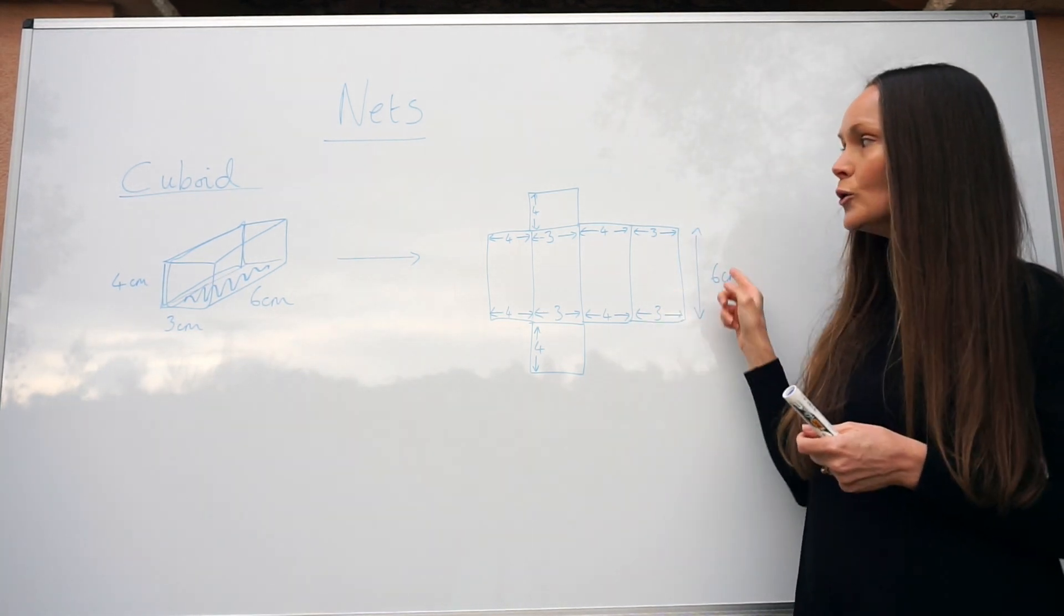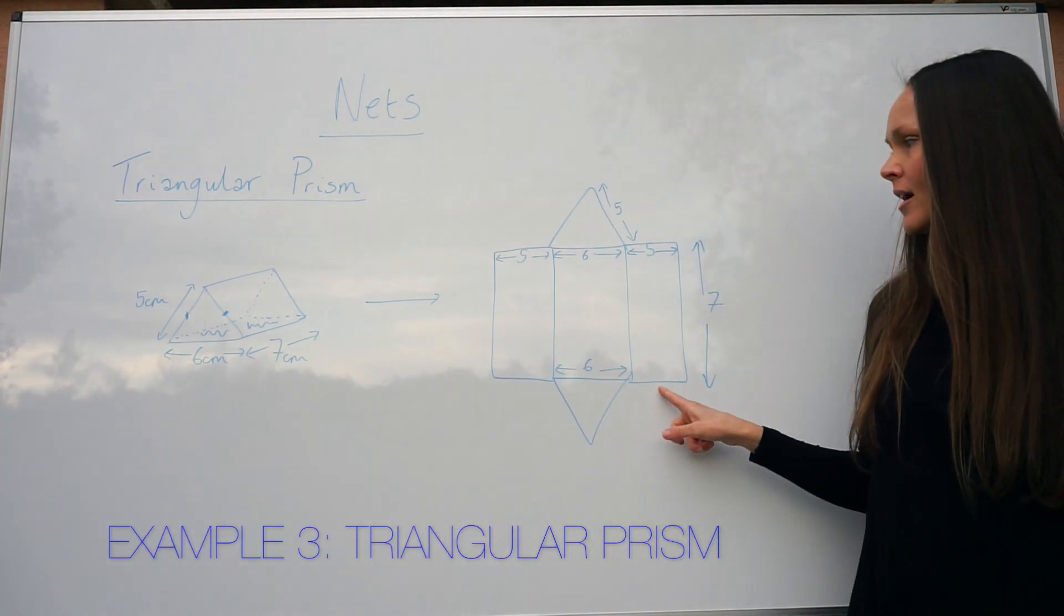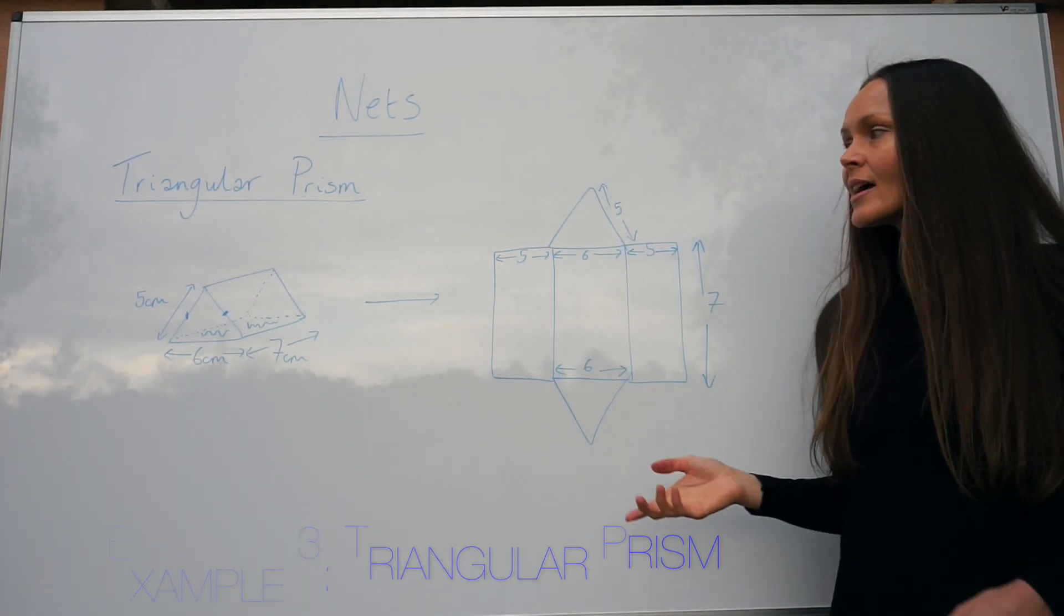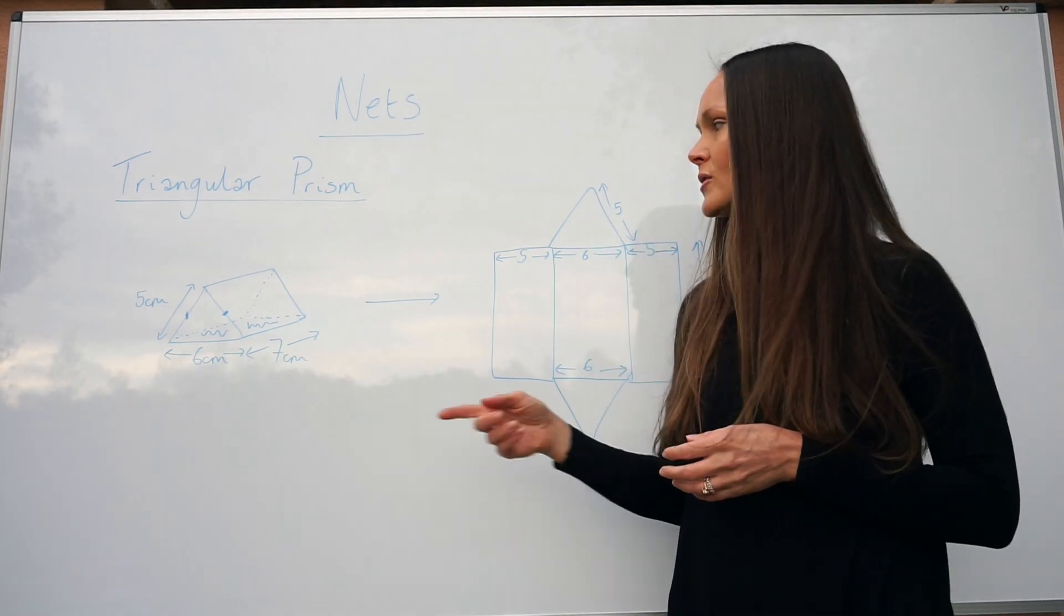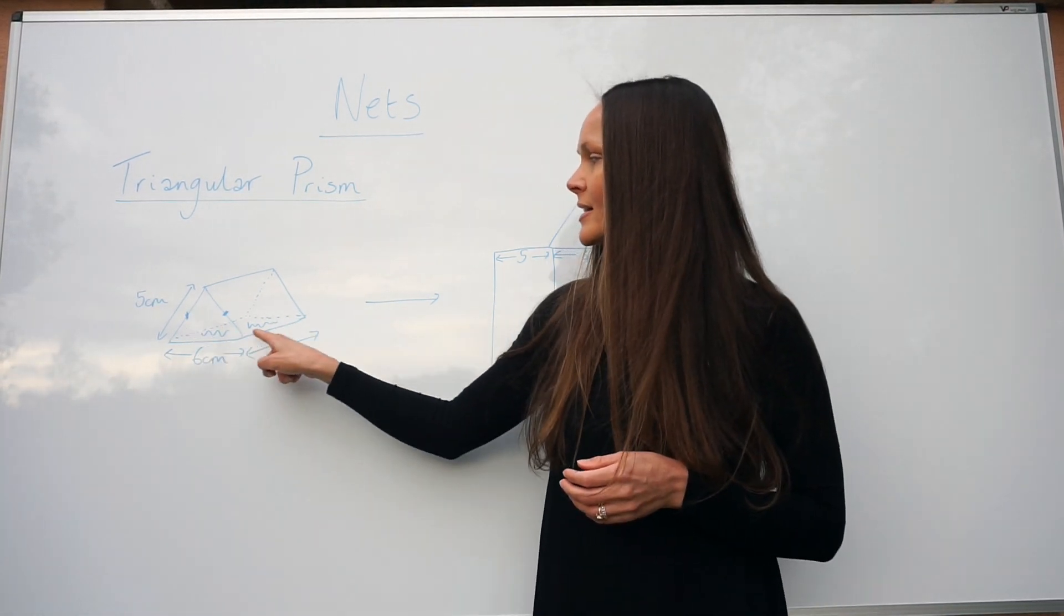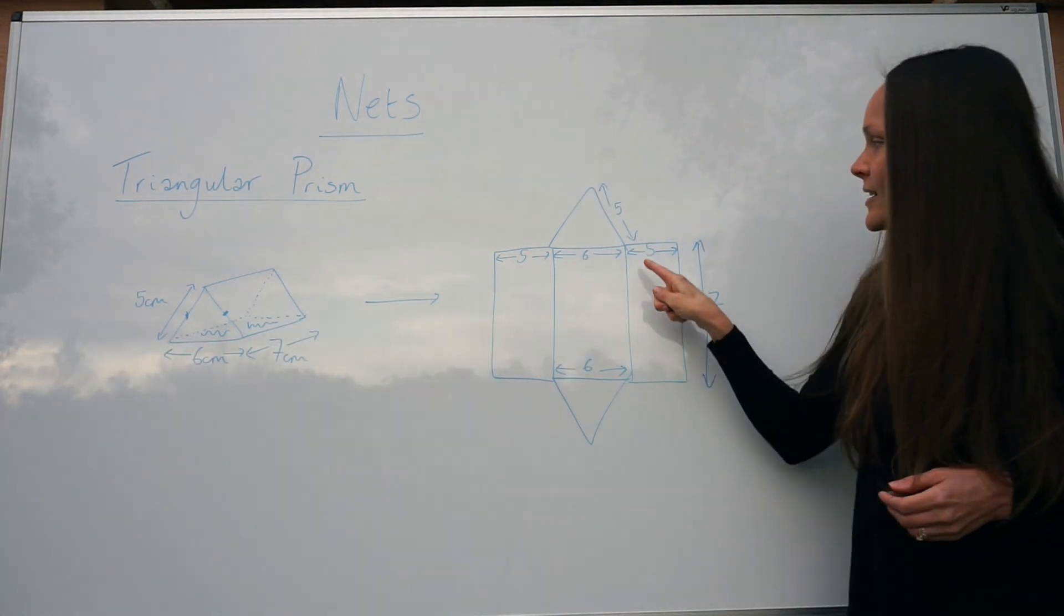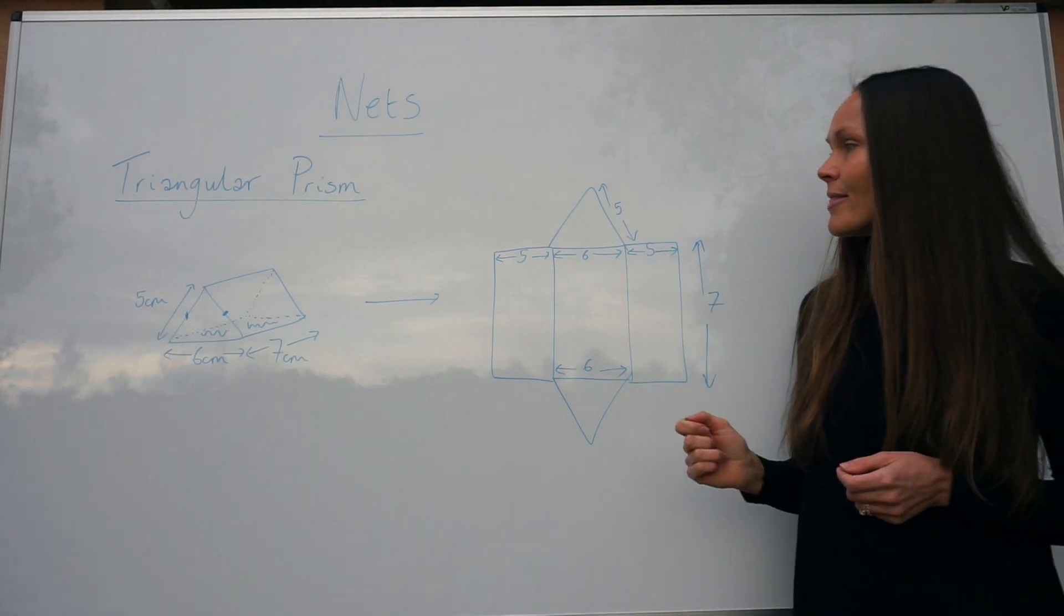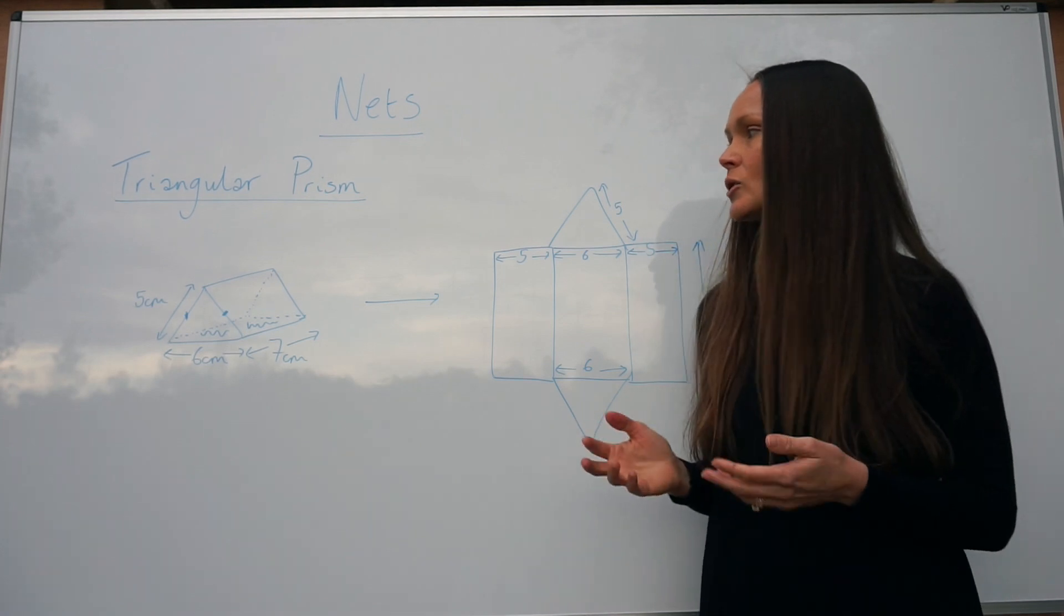Last but not least, I've drawn a triangular prism, and over here I've drawn the net. Just like in the previous examples, start by drawing the base of the prism first. Here's the base; it's this rectangular shape, six by seven, that touches the ground. So here's that rectangle, six by seven.